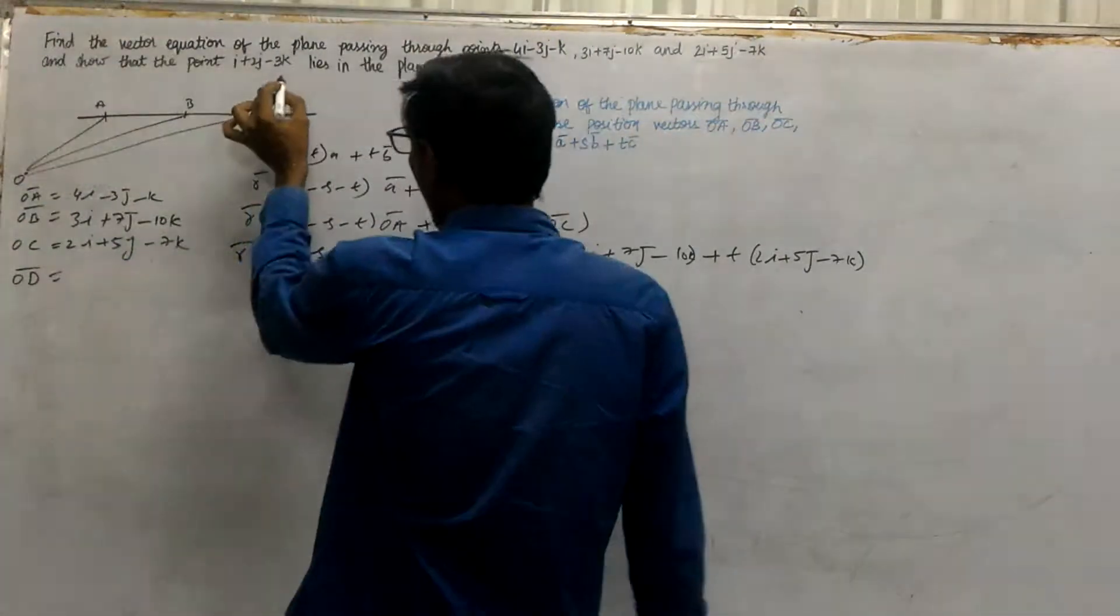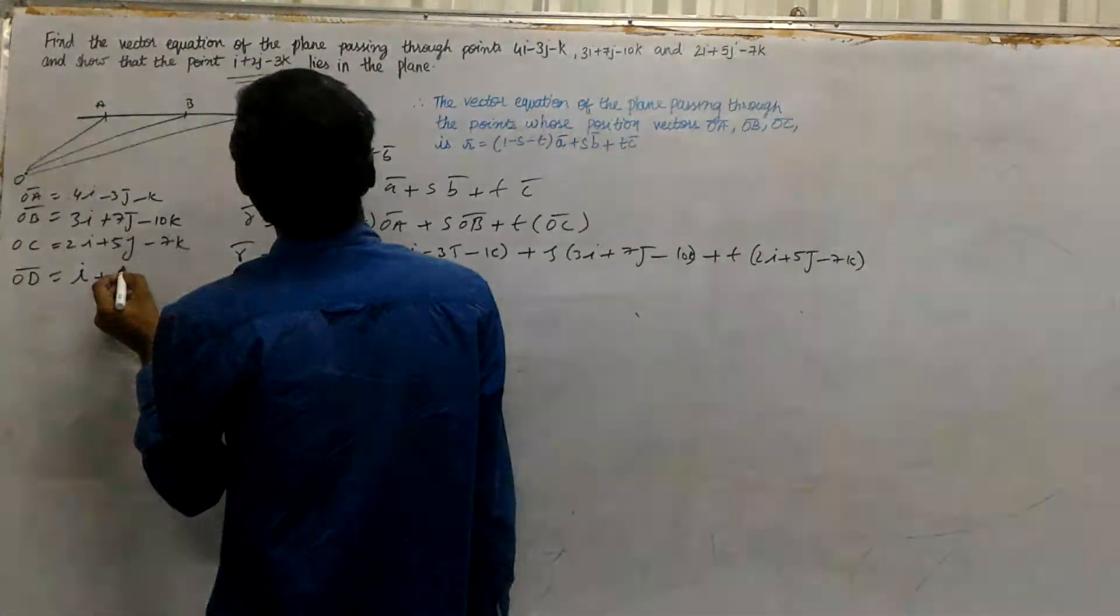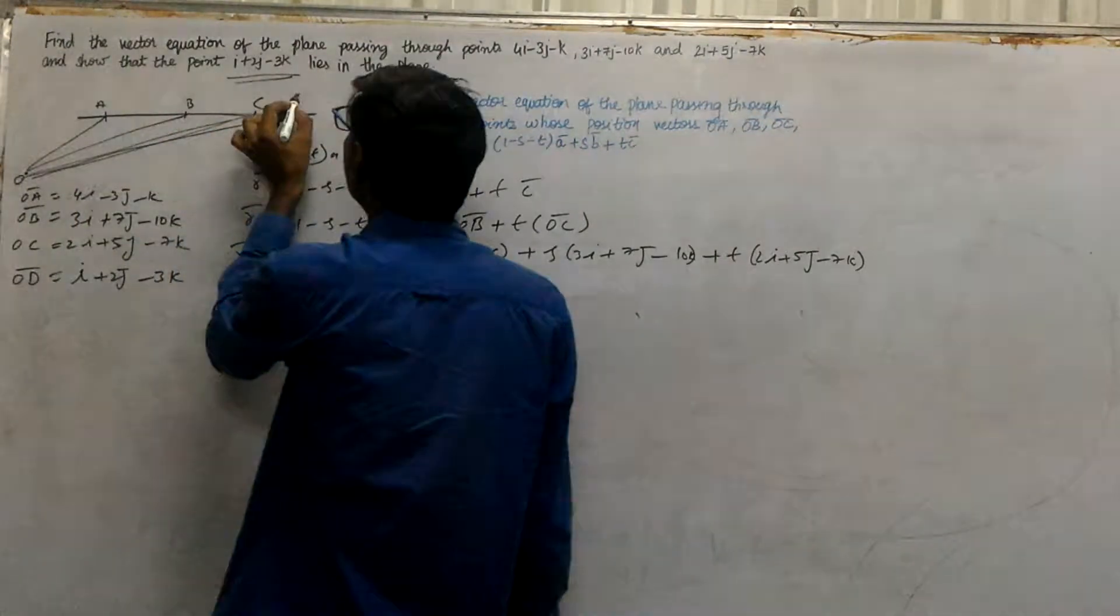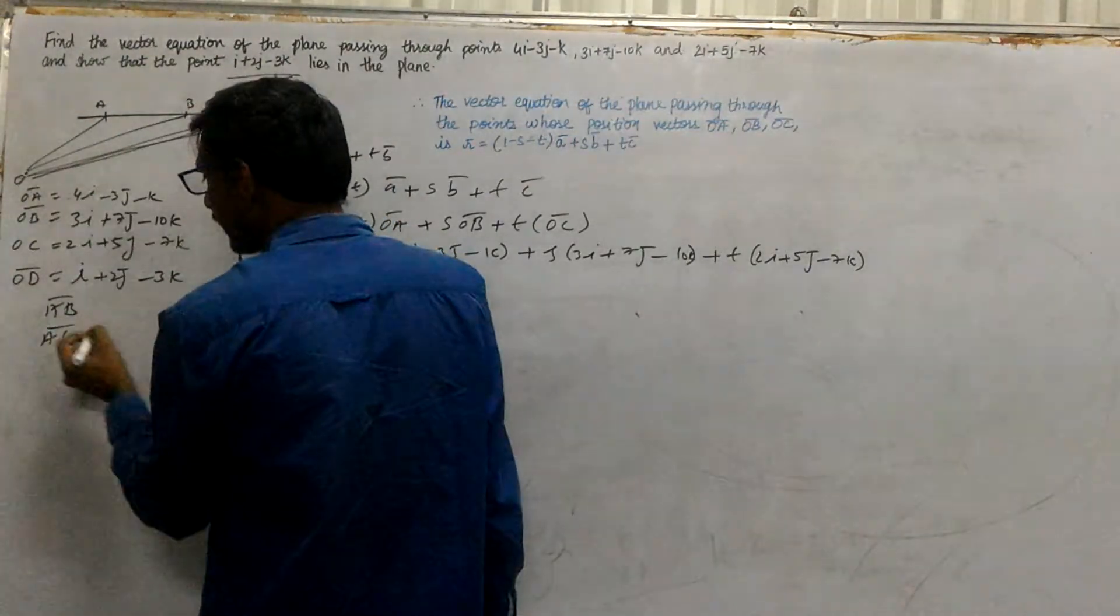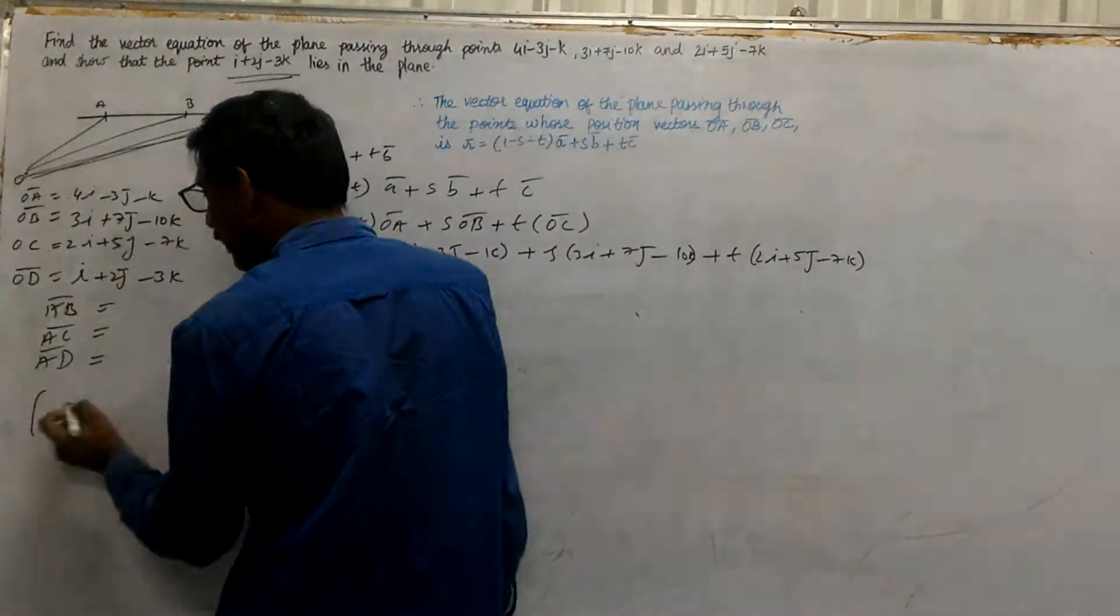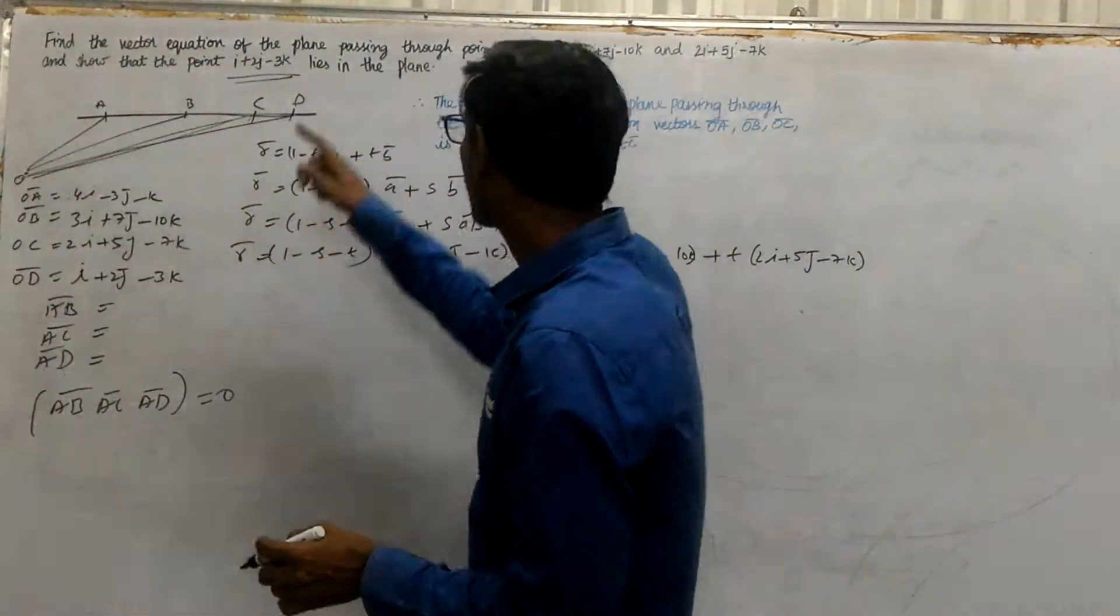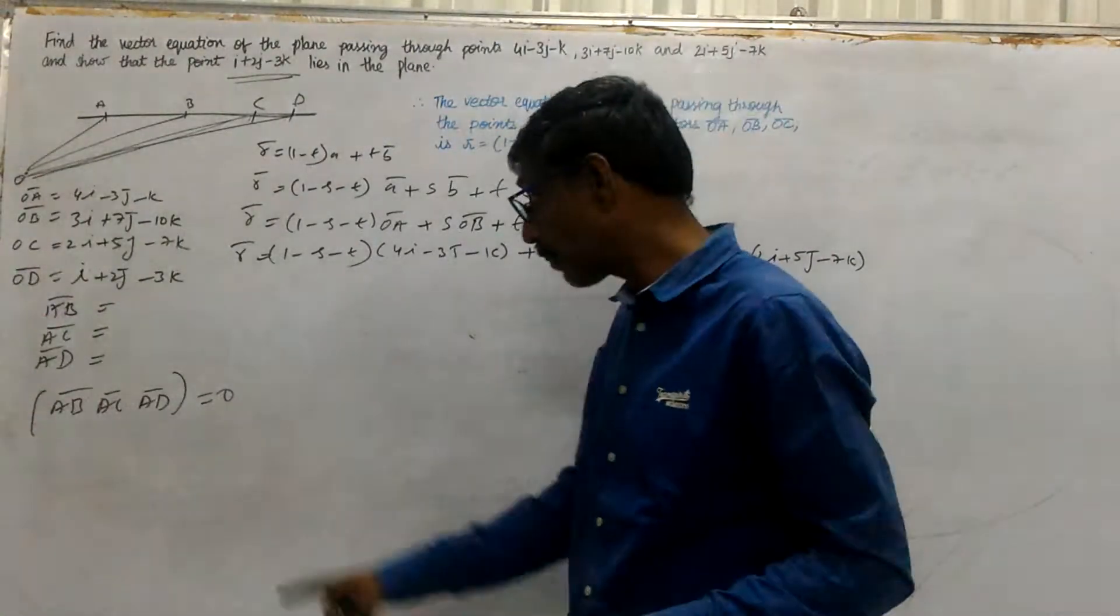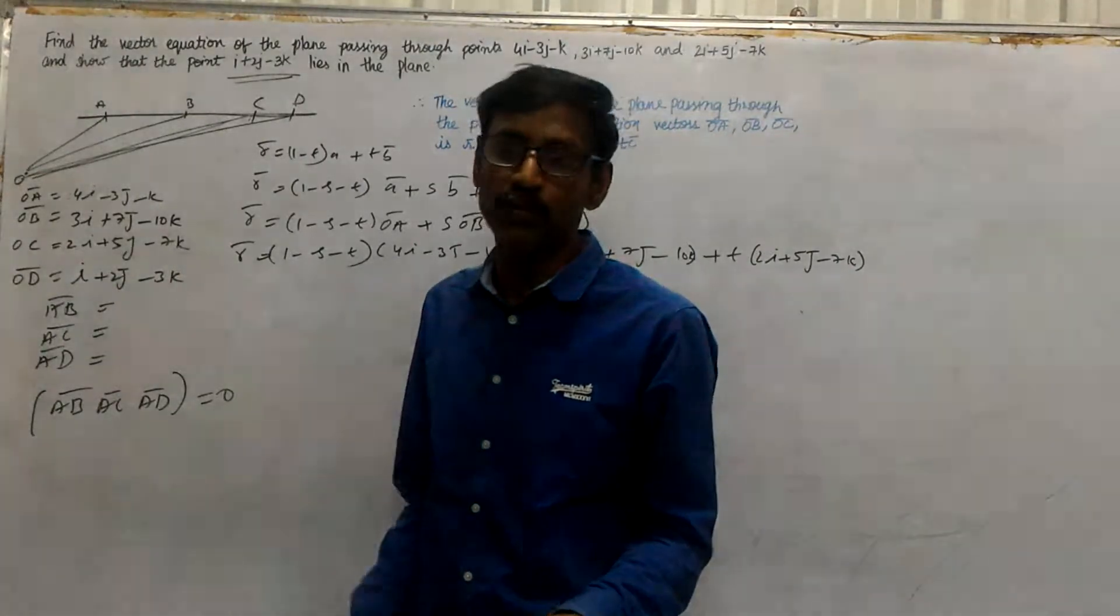What is point D? Point D is i+2j-3k. Now we need vectors AB, AC, and AD. If the determinant of AB, AC, AD equals 0, then they are coplanar. They lie in the same plane.